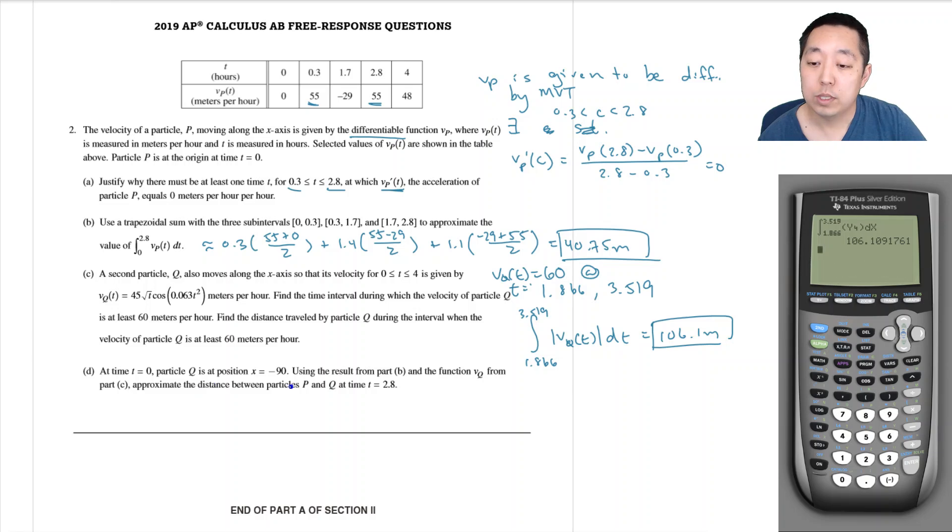At time t equals zero, particle Q is at position negative 90. Use the result from part b and the function vq from part c to approximate the distance at time 2.8. So I need to know the position of Q. He starts at negative 90, and then I got to see what his displacement is over this time.